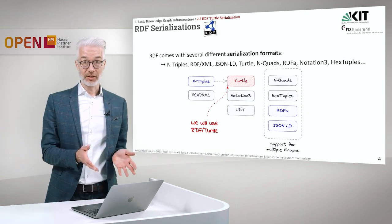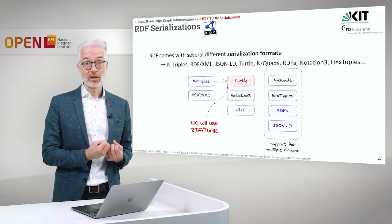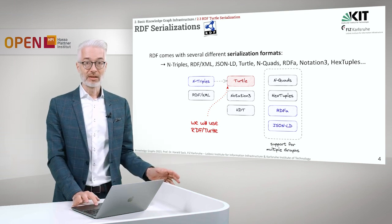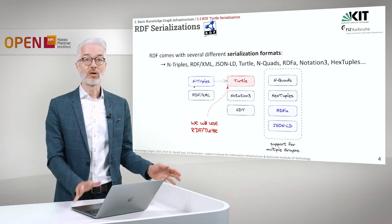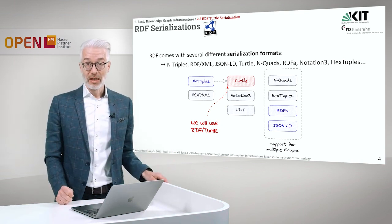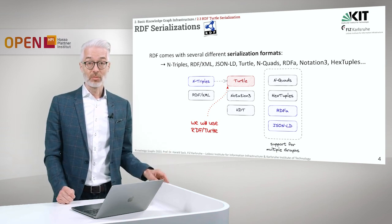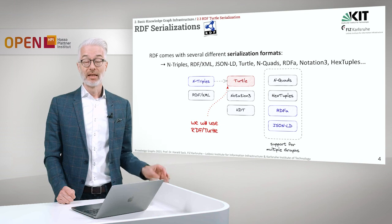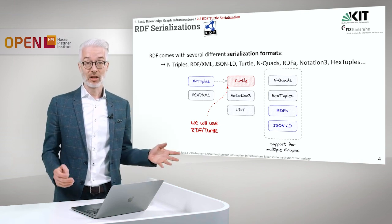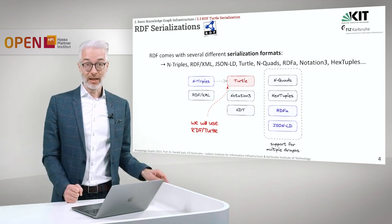We might remember from the last lecture that RDF comes with several different serialization formats. The most simple one is N-triples, where you simply put the URIs of subject, predicate and object together. And then there is another format called TURTLE, which will be our main focus, because TURTLE is much more readable than N-triples, especially when it comes to complex RDF expressions.